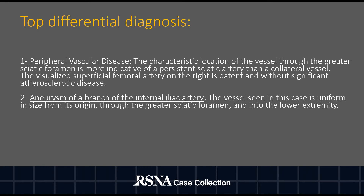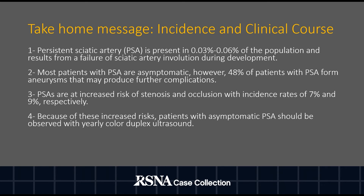Persistent sciatic artery is present in 0.3% to 0.6% of the population and results from a failure of sciatic artery involution during development. Most patients with PSA are asymptomatic. However, 48% of patients with PSA form aneurysms that may produce further complications. PSAs are at increased risk of stenosis and occlusion with incidence rates of 7% and 9% respectively.